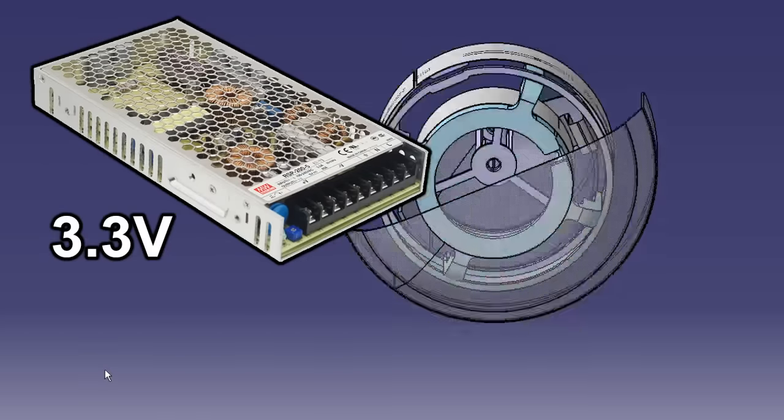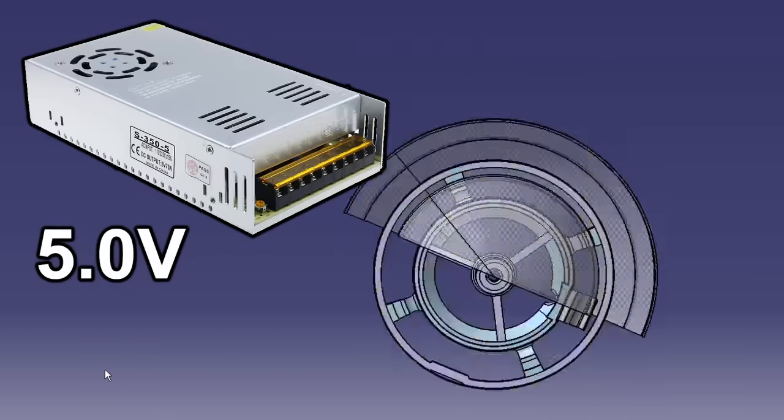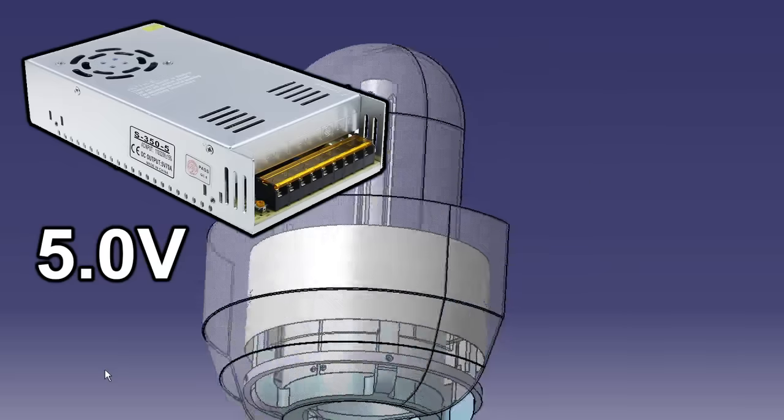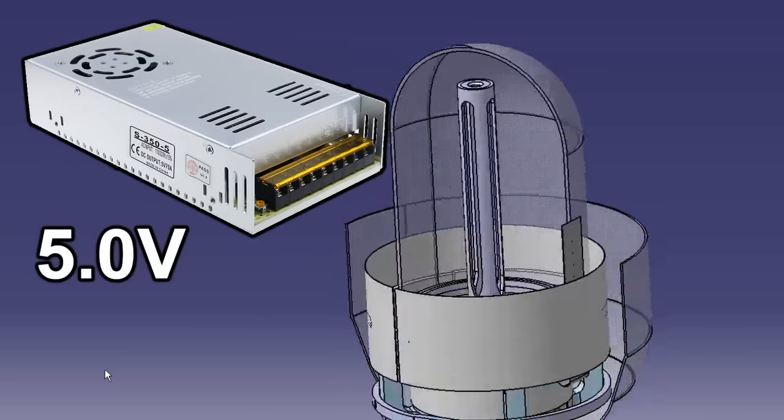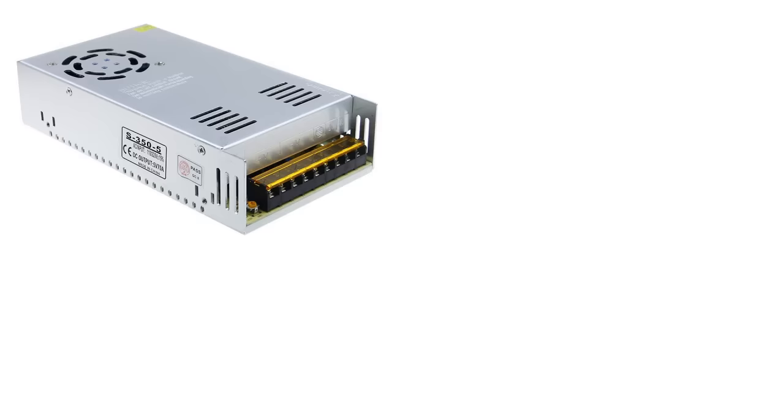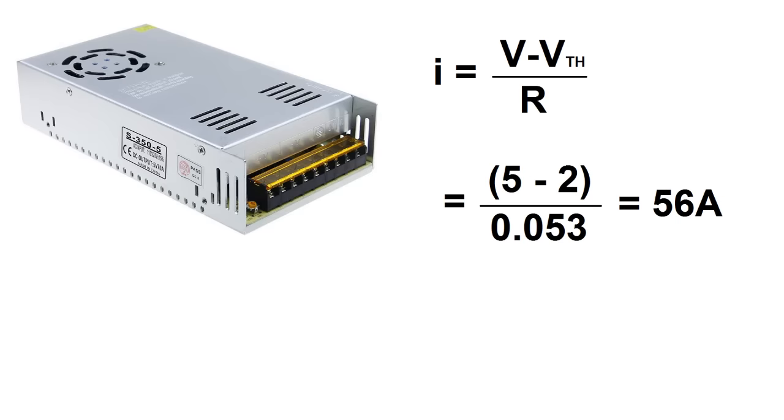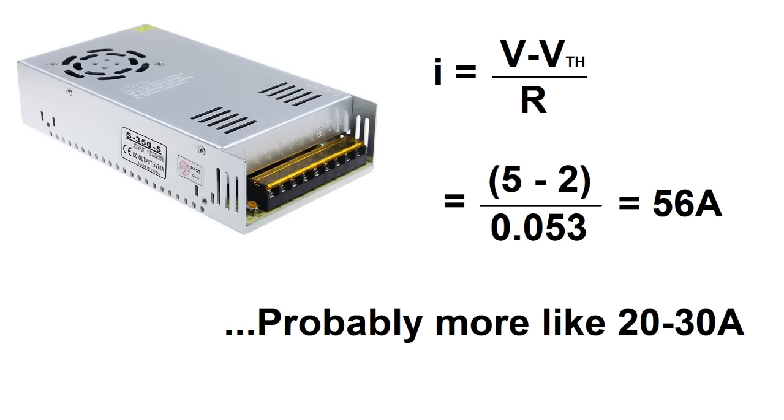Originally, I planned to use a 3.3 volt supply for the cell, but I wanted a little more output, so I just got a 5 volt supply instead. I figured if the cell began to overheat, I'd just dilute the electrolyte a little bit so it wasn't quite as conductive. Based on these numbers, I should get 56 amps with a 5 volt supply. But again, the glass wall would reduce conductivity somewhat, and voltage drop across the leads would reduce the current somewhat too. I figured it would realistically be more like 20 to 30 amps.